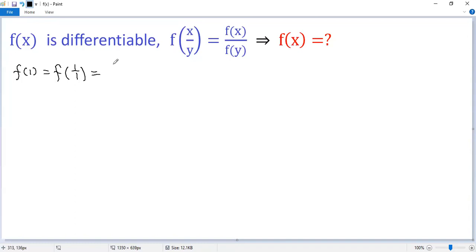Using the given condition, we can write this as f(1) over f(1). We cancel it, so we get 1. We denote this as condition 1.